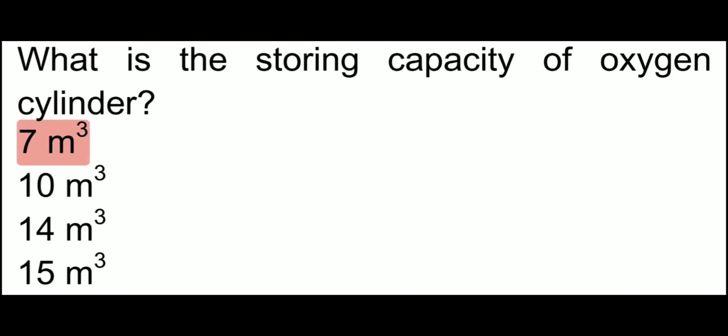What is the storing capacity of an oxygen cylinder? This is asked quite often in exams. The oxygen cylinder is black in colour, and its storing capacity is 7 cubic meters.